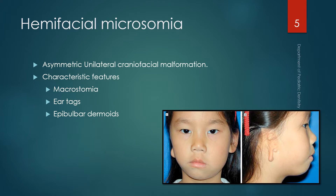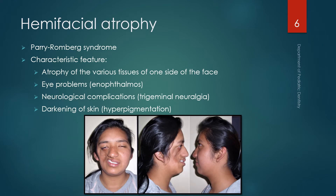Hemifacial microsomia is an asymmetric unilateral craniofacial malformation characterized by macrostomia, ear tags, and epibulbar dermoids. The ear tags are very characteristic and come in different degrees of severity. Epibulbar dermoids are tumors of the eyes. As the name suggests, hemifacial microsomia is a unilateral craniofacial deformity, and the ear tags help identify that something is occurring on one side.